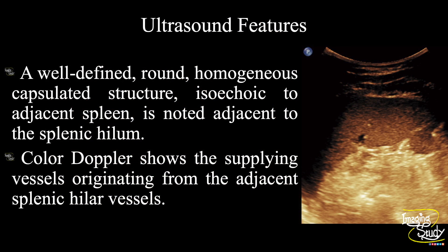So in summary, a well-defined round homogenous capsulated structure isoechoic to the adjacent splenic parenchyma is noted adjacent to the splenic hilum. Color Doppler shows the supplying vessels are originated from the splenic hilar vessels. These features are consistent with a splenunculus or accessory spleen.